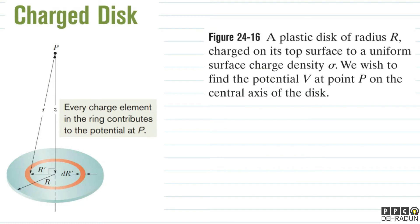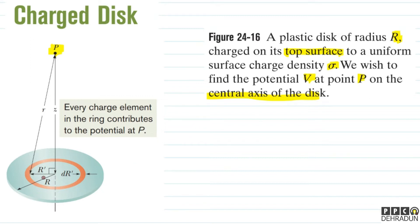Now let's look at the case of a charged disk. We have a plastic disk of radius R charged on its top surface to uniform surface charge density sigma. We want to find the potential V at point P on the central axis. We'll use elemental rings, since we already know the potential due to a ring. We go to a distance r' and take a ring of thickness dr'.